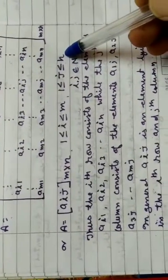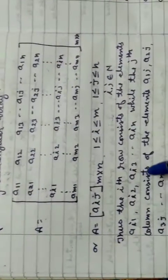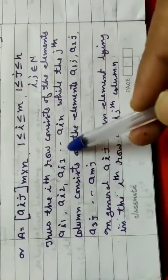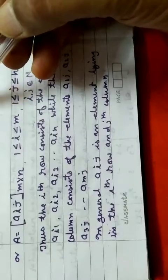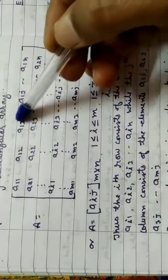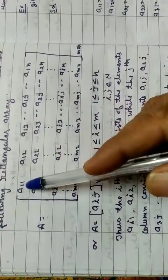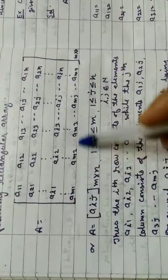While the jth column consists of the elements a1j, a2j, aij, amj. This is the jth column, this is third column, this is second column, this is first column, this is nth column. Similarly, this is first row, this is second row, this is ith row, and this is mth row.